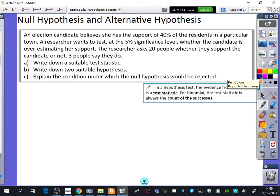An election candidate believes she has the support of 40% of the residents in a particular town. A researcher wants to test at the 5% significance level whether the candidate is overestimating her support. That sounds interesting. The researcher asks 20 people whether they support the candidate or not. Three people say they do.